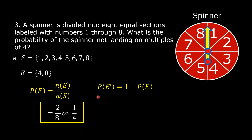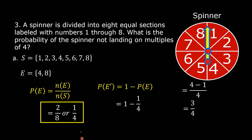The probability of the complement of an event is equal to 1 minus the probability of the event. So this is now equal to 1 minus 1 fourth. This is understood to be 1 over 1. The least common denominator is 4, so this is now equal to 4 minus 1 over 4, which equals 3 over 4. So the probability of the complement of the event, or the probability of the spinner not landing on multiples of 4, is 3 fourths.